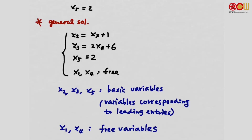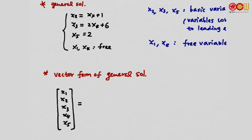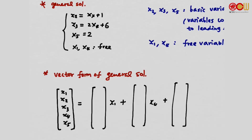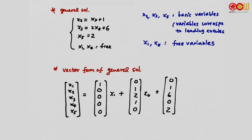Sometimes we write the solution in a different form: vector form. Since x1 and x4 are free variables, all other variables can be written in terms of x1, x4, and constant terms. For example, x1 = x1, x2 = x4 + 1, x3 = 0·x1 + 2·x4 + 6, x4 = 0·x1 + 1·x4, and x5 = 2. A solution in this form is the vector form of the general solution.